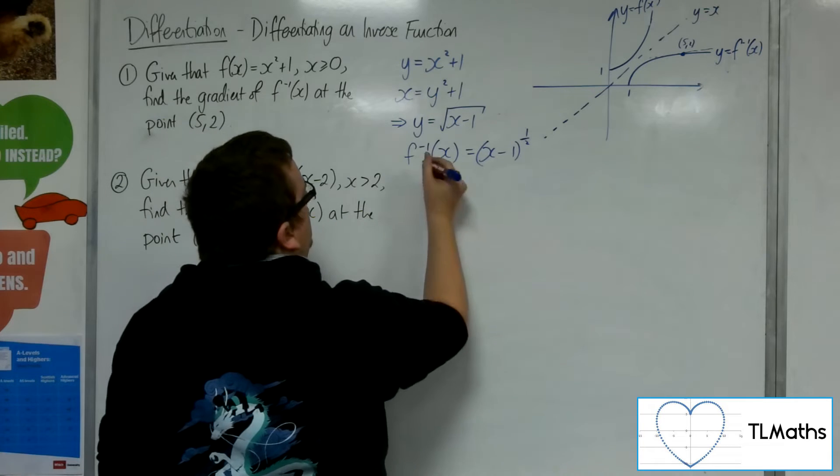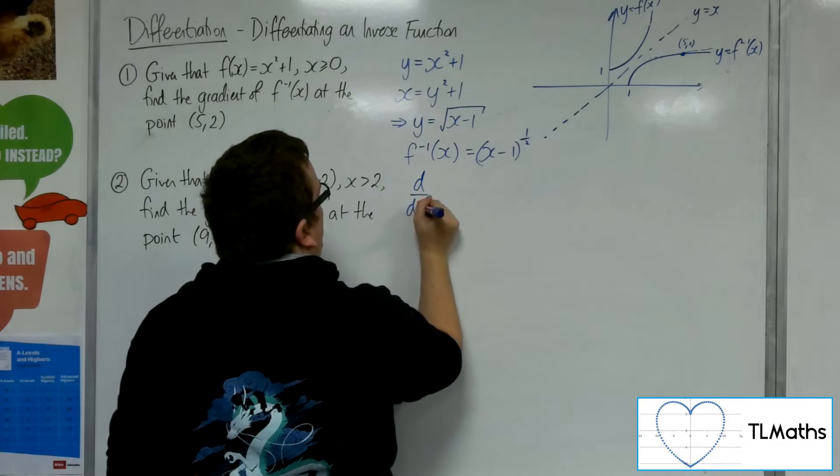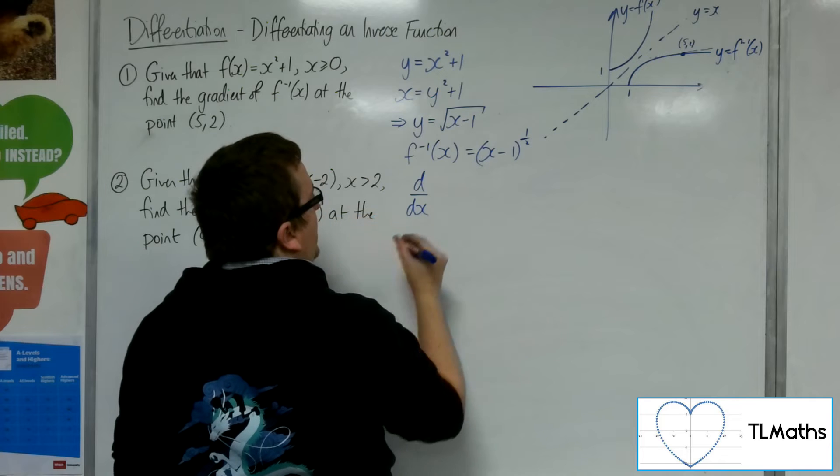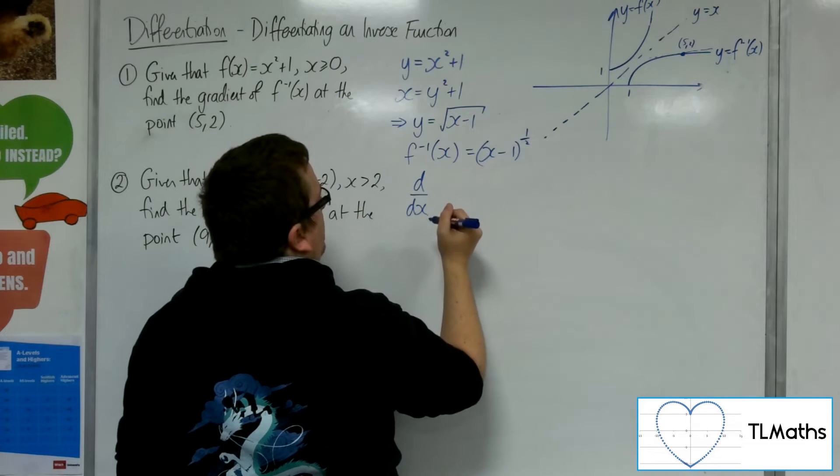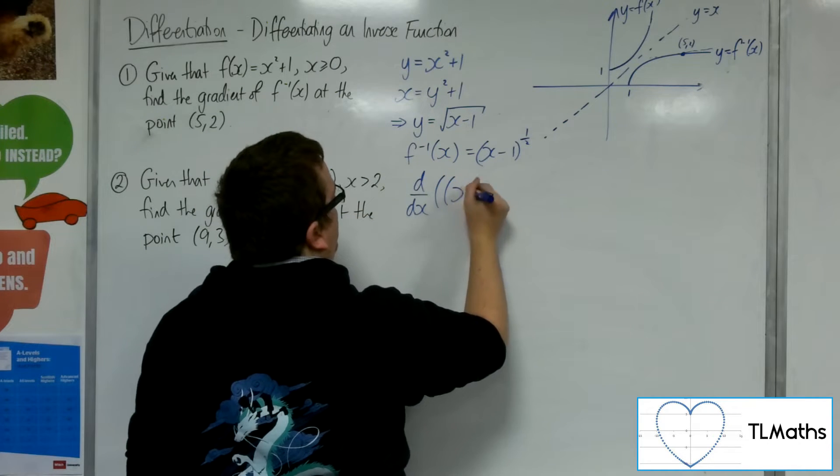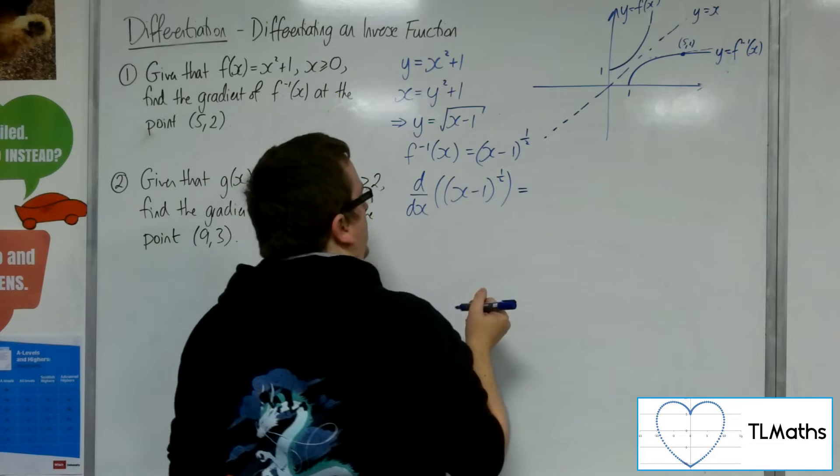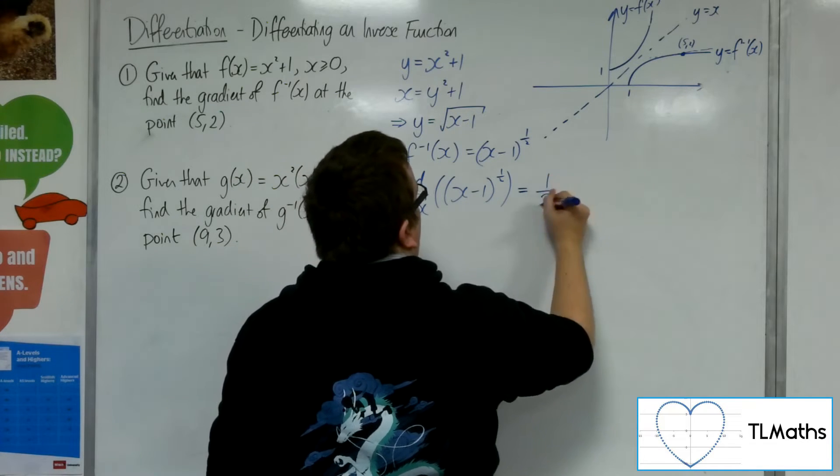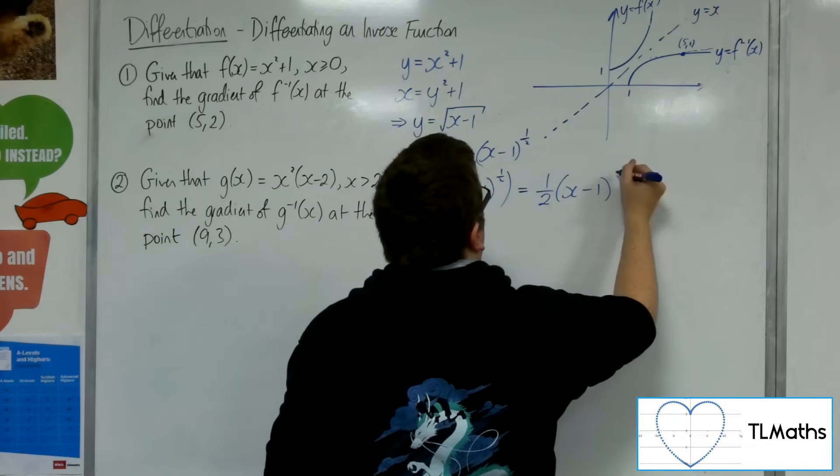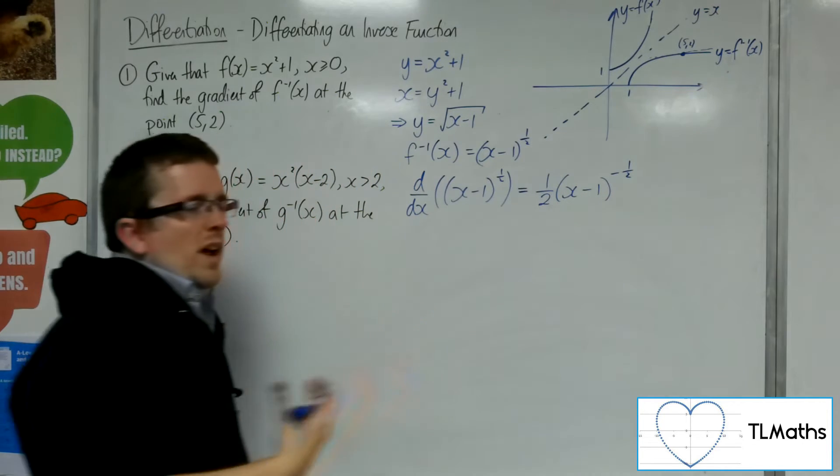Okay, so I've got to differentiate this. So I want to find the derivative, the d/dx, of f inverse of x. So of this (x minus 1) to the half. And so the half would come down to the front, and then I would take 1 off the power.